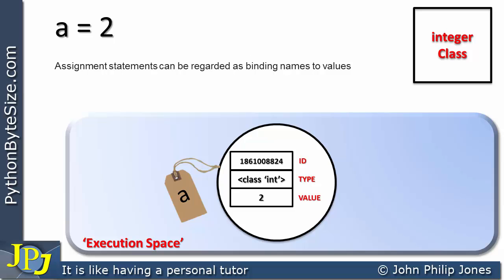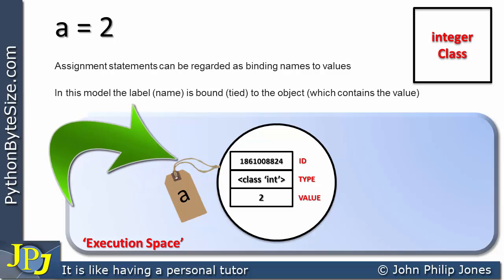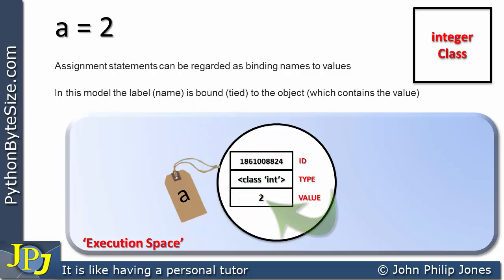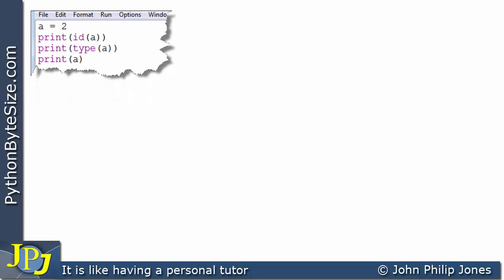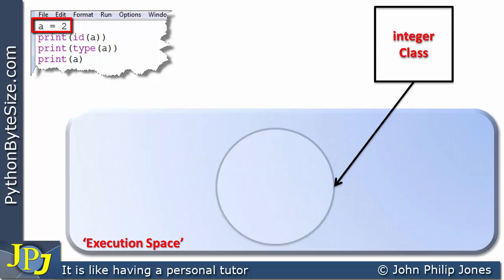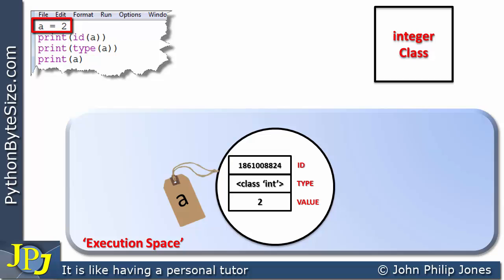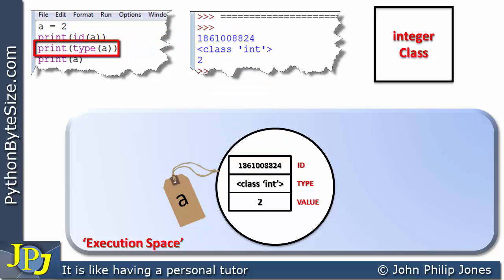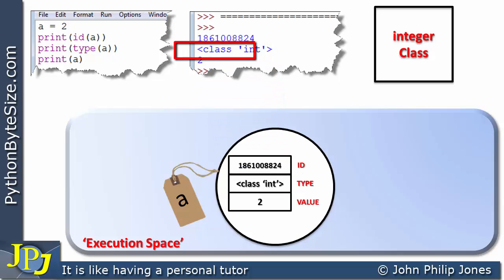Assignment statements can be regarded as binding names to values. In this model, the label — in other words the name — is bound, or tied, to the object which contains the value. When we execute A is assigned 2, the execution space finds the integer class, helps produce the object, and the object is then labeled A. When we print the ID of A, we locate A, locate the ID, and that gets printed. When we print the type of A, we locate the label and find the type value, which is then printed. When we print A, we locate the label, locate the value, and that gets printed.